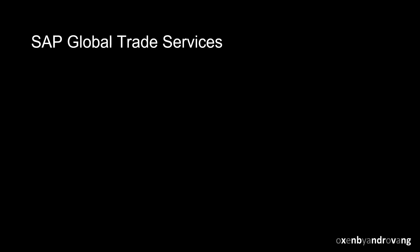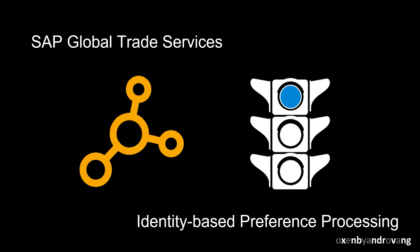Welcome. SAP GTS identity-based preference processing maximizes the potential of preferential origin by determining the origin one level below the product. With a batch or any other identifier, the worst-case principle on the product level no longer applies.